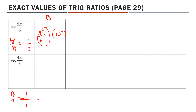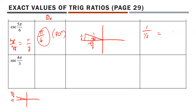We want hypotenuse over opposite: hypotenuse is 1, opposite is 1/2. So 1 divided by 1/2 equals 2. It's positive 2 because by the CAST rule, sine is positive in quadrant 2, and cosecant — being related to sine — is also positive there.